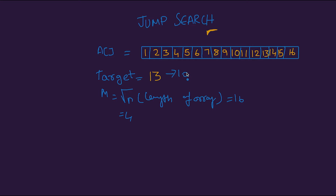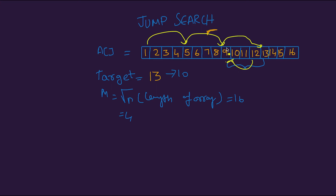If the target is, say, 10, once we reach index 13 and the target is less than the value there, we perform a linear search between index 9 and 13. We go back to 9 and search sequentially for the element. If we don't find it we return -1. So we jump from block to block and then do a linear search within the last block. The worst case time complexity is O(√n).